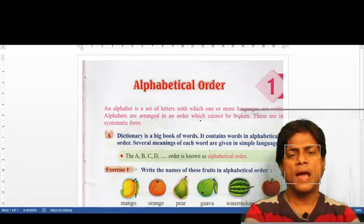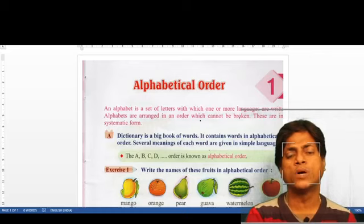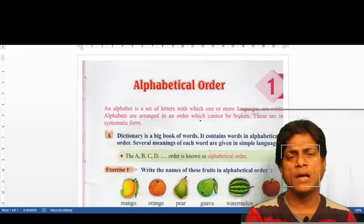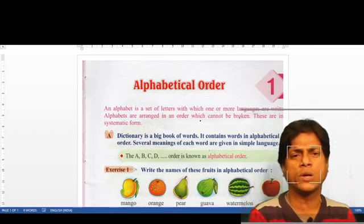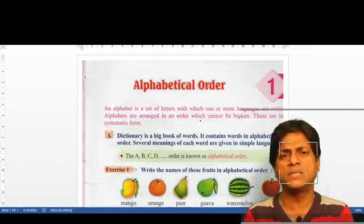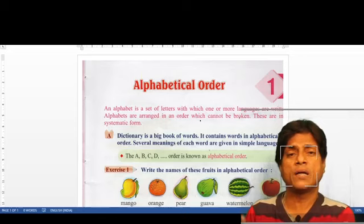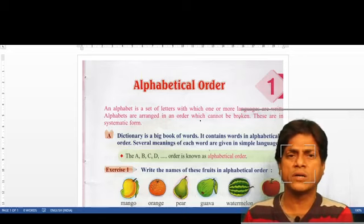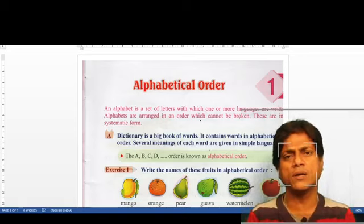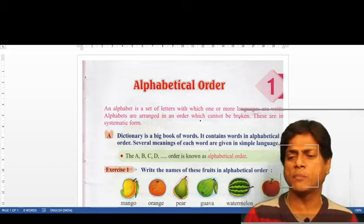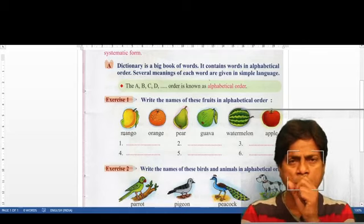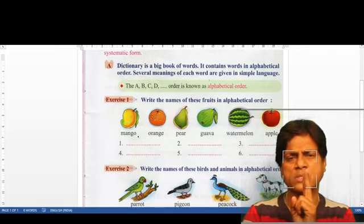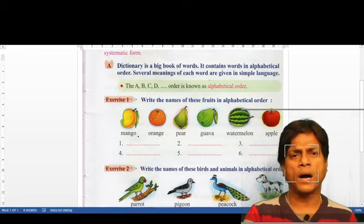Alphabetic order mein words likhna kya matlab hota hai? Alphabetic order mein words likhne ka matlab hota hai ki pehle hum A se start honne waale words ko likhenge, uske baad B se start honne waale words ko likhenge, uske baad C se start honne waale words ko likhenge. This is called writing words in alphabetical order.